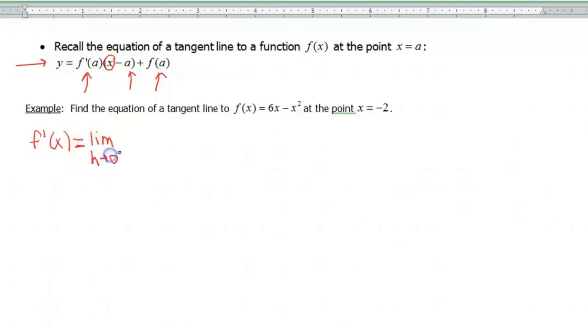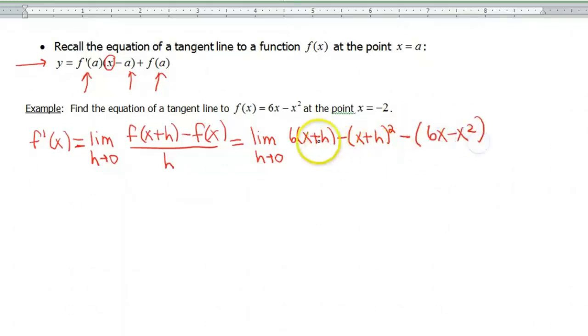So remember that f prime of x is defined to be the limit, h approaches 0, f of x plus h minus f of x, all divided by h. Okay, plugging pieces into my function, so limit h approaches 0, f of x plus h. So I'm gonna plug that in, 6 quantity x plus h minus the quantity x plus h squared. So that takes care of f of x plus h, minus, put a parenthesis in, f of x. So that's 6x minus x squared, all of this is divided by h.